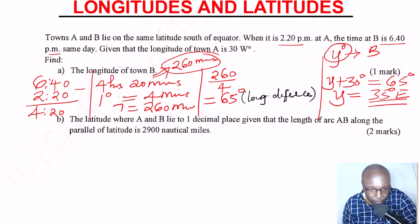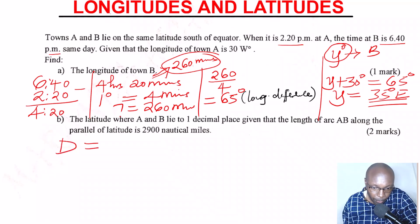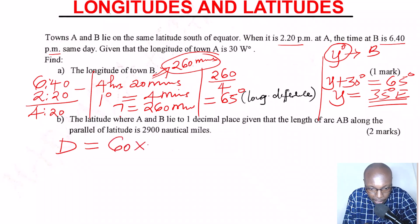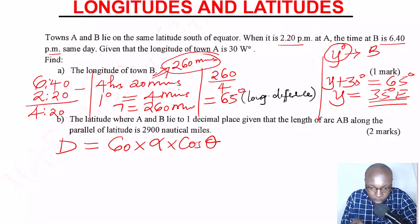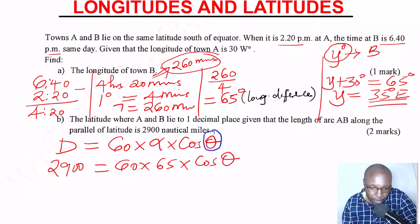Let's go to the second part of the question: find the latitude where A and B lie to one decimal place, given that the length of arc AB along the parallel of latitude is 2,900 nautical miles. The formula for distance along the parallel of latitude in nautical miles is: distance equals 60 times the longitude difference times cosine of the latitude angle. Substituting: 2,900 equals 60 times 65 times cosine of theta.